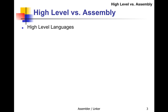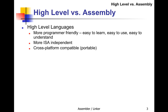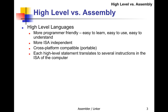High-level languages like C, which you've learned before, are easier to learn, easier to use, easier to understand, and more programmer-friendly. They're more instruction set architecture-independent. When you write a C program, you can compile that on an MSP430, on your PC, or on many other processors — they're portable. Each high-level statement translates into several instructions in the instruction set architecture of the computer.